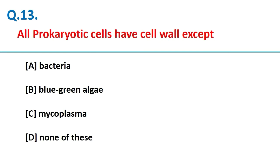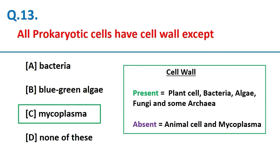All prokaryotic cells have a cell wall except mycoplasma. Cell walls are present in plant cells, bacteria, algae, fungi, and some archaea, but are absent in animal cells and mycoplasma.